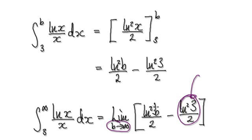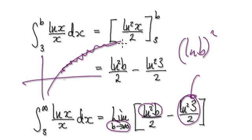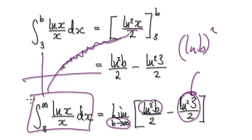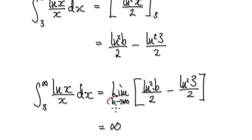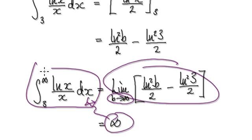As b heads towards infinity: the term involving 3 is a finite number, but [ln(b)]² will just get bigger and bigger and bigger, because the natural log function grows without bound. So this thing here is going to diverge. Taking the limit as b heads towards infinity, the integral heads towards infinity, meaning this integral diverges.